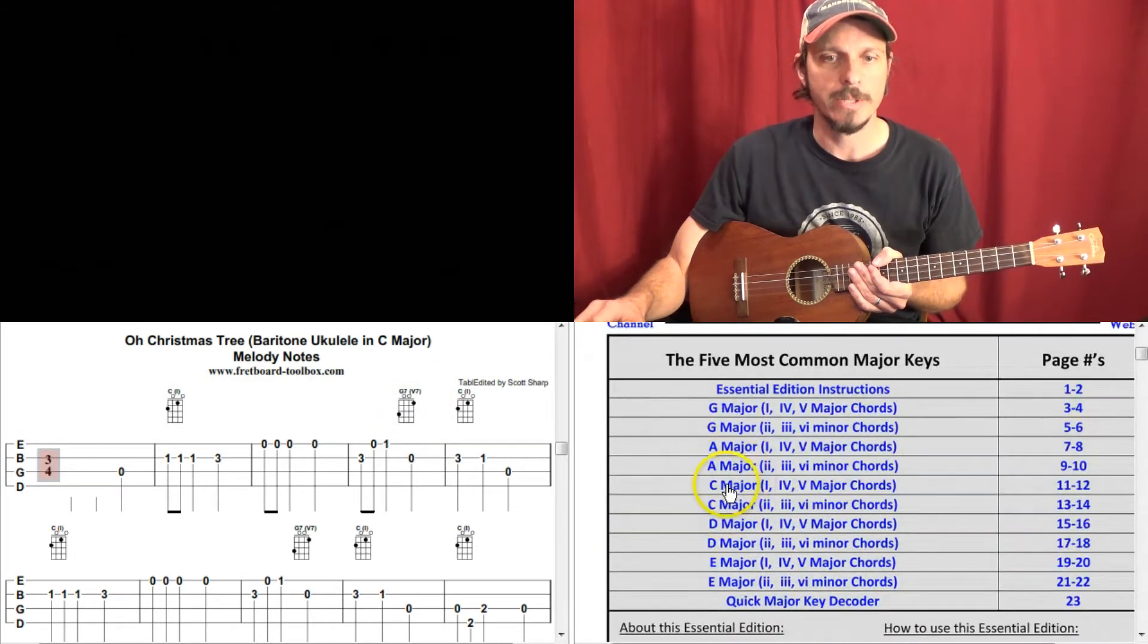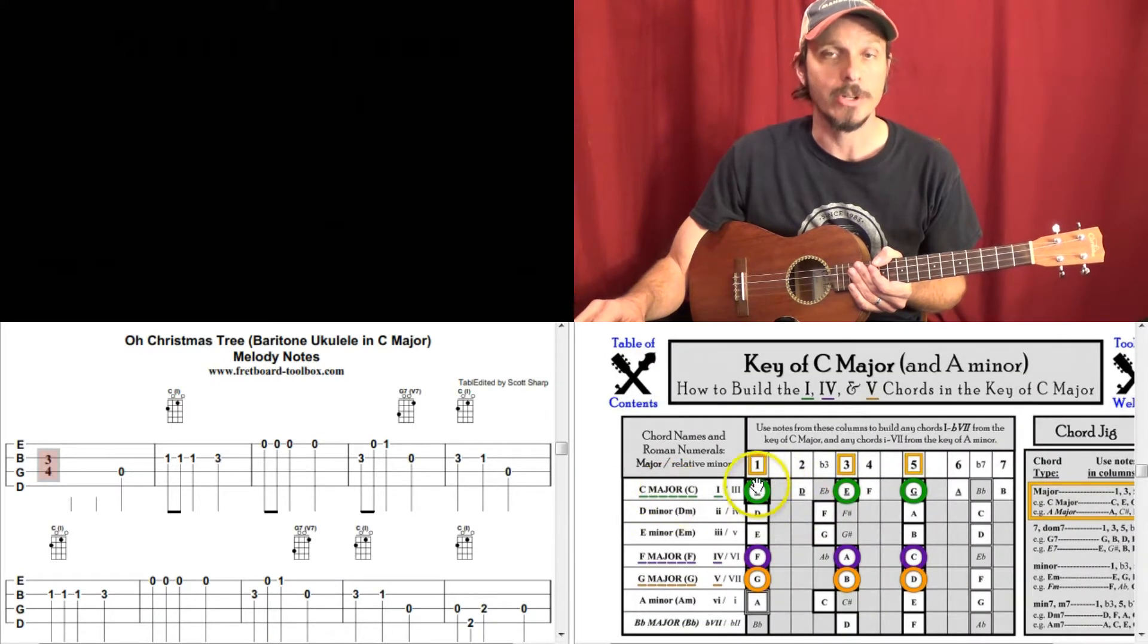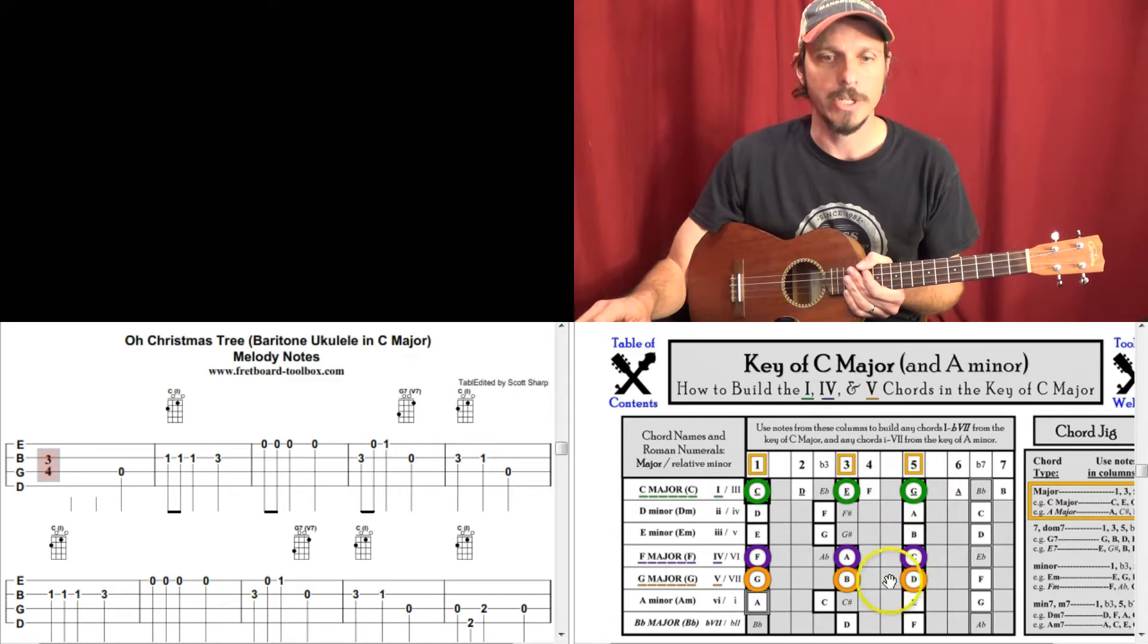So if we go to the key of C major page, I want you to be able to see that C majors are always made of the notes C, E, G. So every time we make a C major shape, we're going to be using the notes C, E, and G.